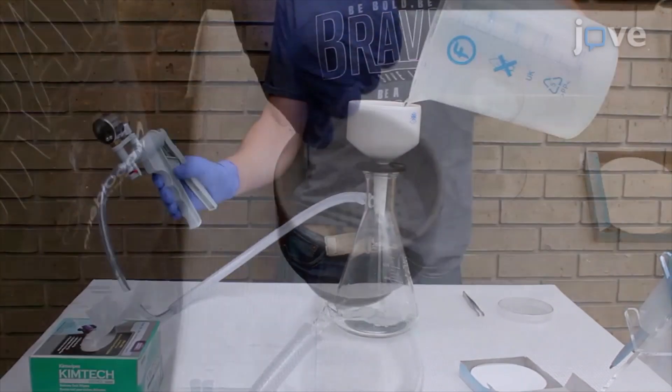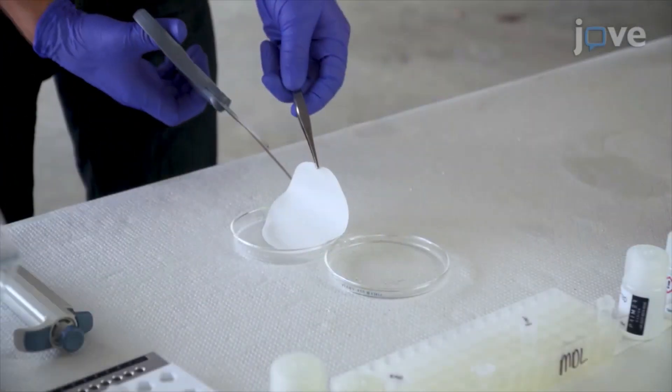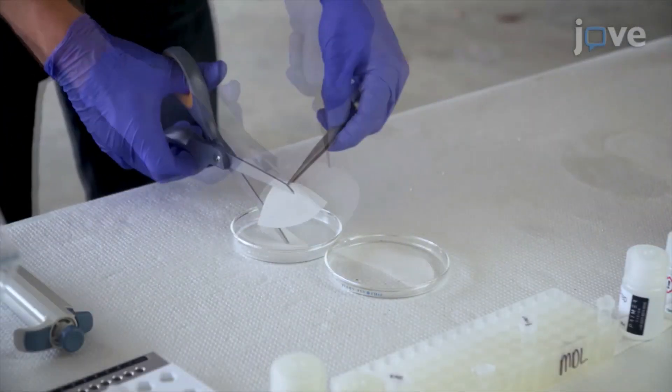When all of the water has been filtered, use forceps to remove the filter paper from the funnel and use sterile scissors to cut the paper into small pieces.